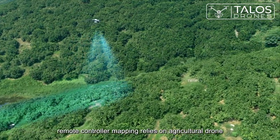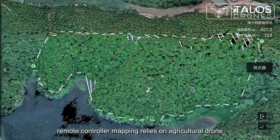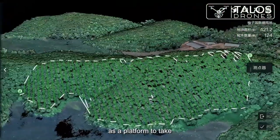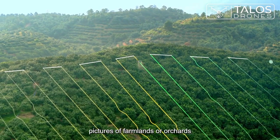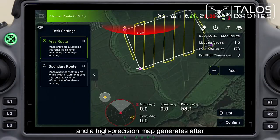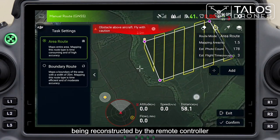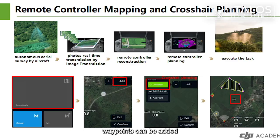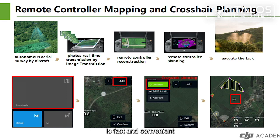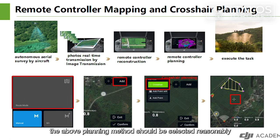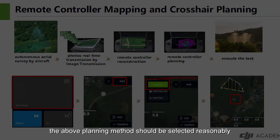Remote controller mapping relies on the agricultural drone as a platform to take pictures of farmlands or orchards, and a high precision map is generated after being reconstructed by the remote controller. Waypoints can be added directly using the crosshair function on the high definition map, which is fast and convenient. For plots with different terrains and areas, the above planning methods should be selected reasonably.